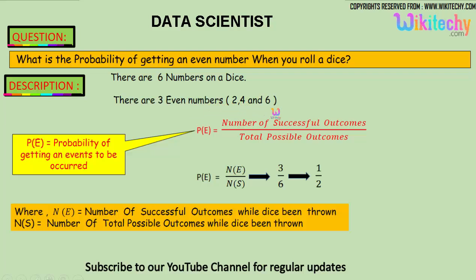So here is the formula: probability of getting an event is the number of successful outcomes divided by the total possible outcomes. So three is the number of successful outcomes divided by the possible outcome is six. So three by six, you got one by two.